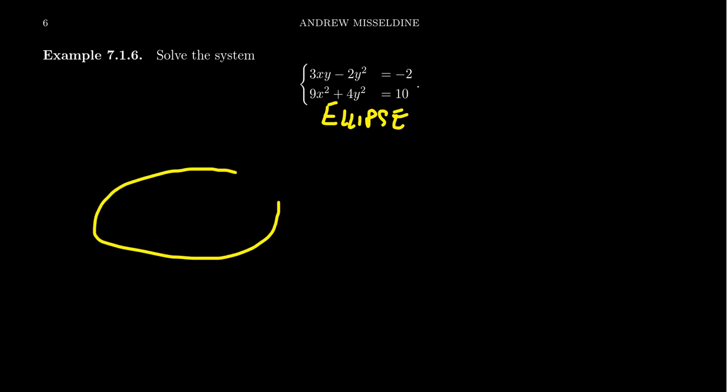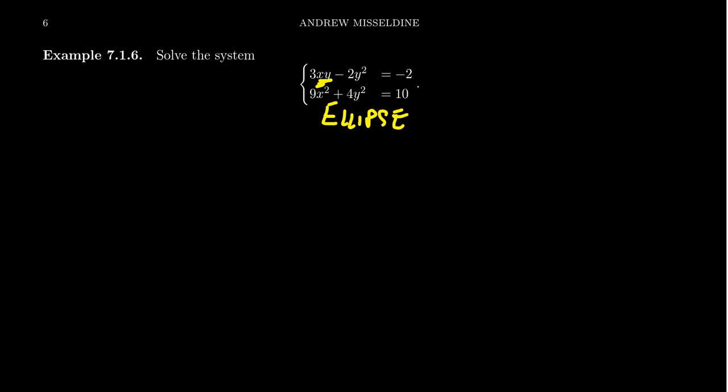So you're going to get something like this — that's the graph of this thing. But the first equation has x and y and a y squared, and I have no idea how to graph that. Well, when it comes to nonlinear systems, you don't actually have to graph them. The graph can help intuitively, since we're looking for the intersections of the graphs, but this can be done purely algebraically, and the strategies we have will be very effective.